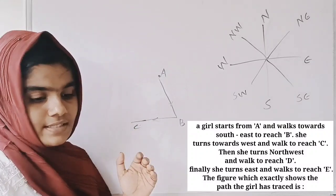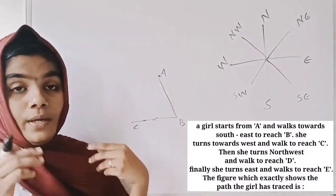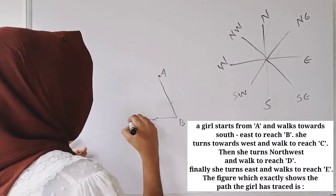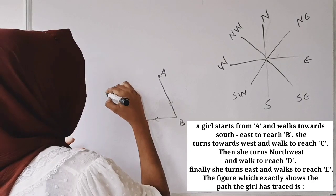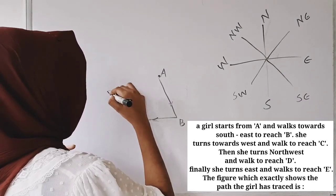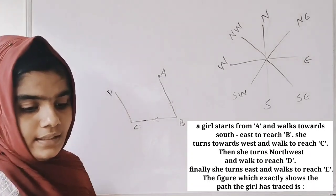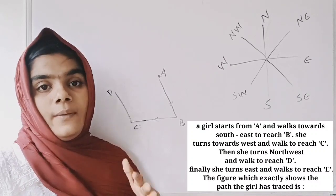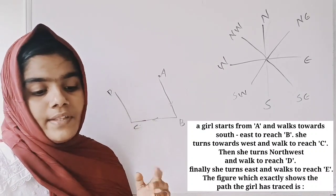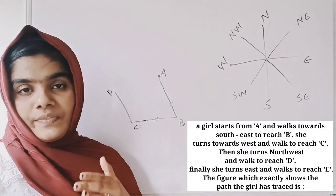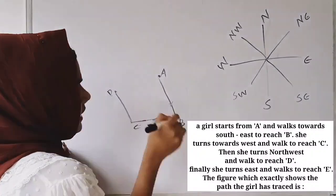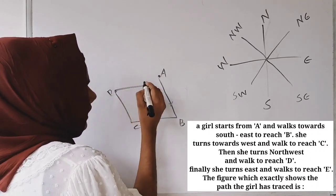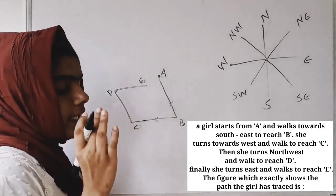Then she turns North and walks to reach D. Finally, she turns East and walks to reach E. The answer and the end point is E.